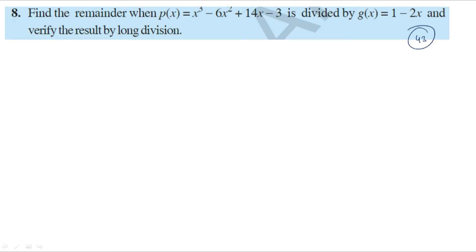In previous videos we discussed the 7th problem. Now, 8th problem, page number 43. The question: find the remainder when P of x equals x cubed minus 6x squared plus 14x minus 3 is divided by g of x equals 1 minus 2x, and verify the result by long division.